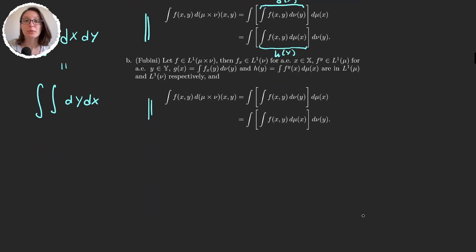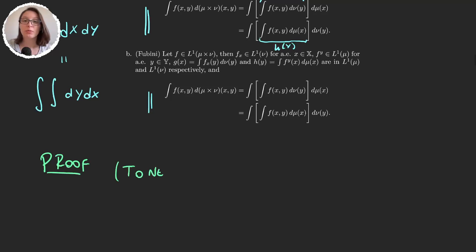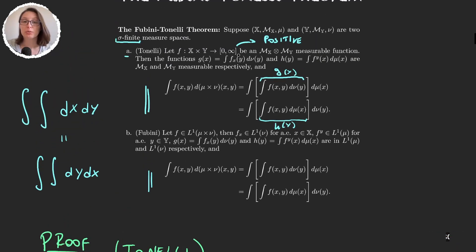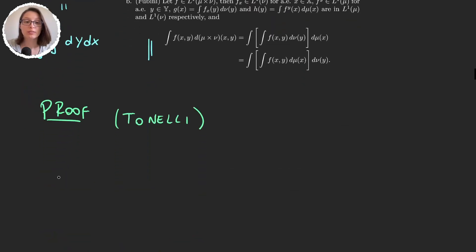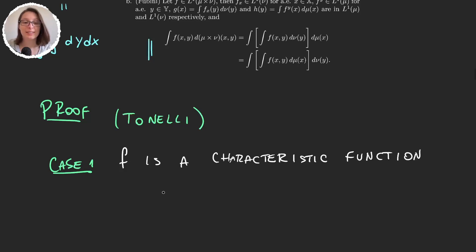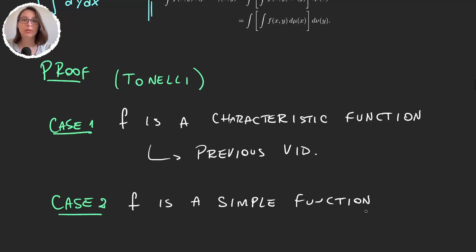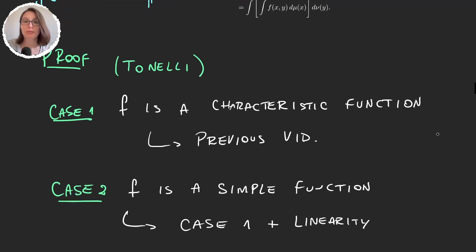With that introduction, let's move on to the proof. Let's start with the proof of Tonelli's theorem by studying different cases for our function f. Remember, f is a positive measurable function. In case one, we consider what happens if f is a characteristic function — this case is exactly what we saw in the previous video. In case two, if f is a simple function, then f is a sum of characteristic functions, so it follows directly from case one and linearity of the integral.